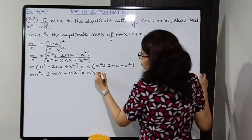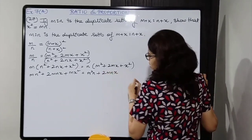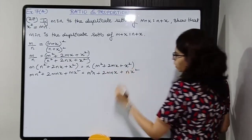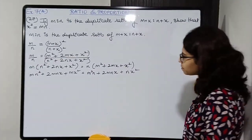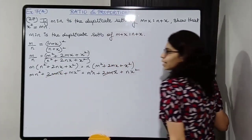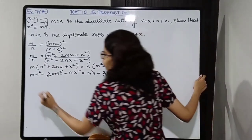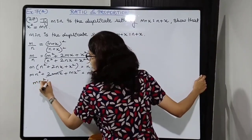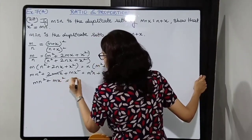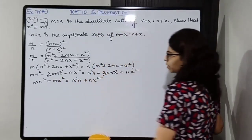The 2mnx terms cancel out. We are left with mn squared plus mx squared equals m squared n plus nx squared.